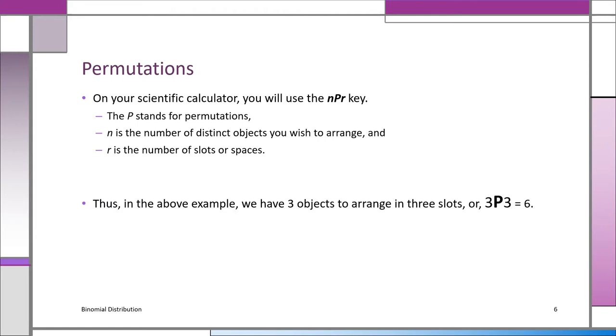So, the previous example, we started with A, B, C. We had three objects, A, B, C. We want to put them into three slots. On your calculator, that will be three permutation three, 3P3. And you play with it. In your calculator, you'll see it's six. 3P3 is six.